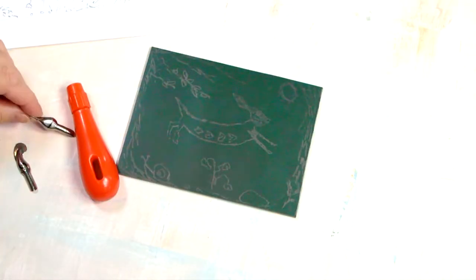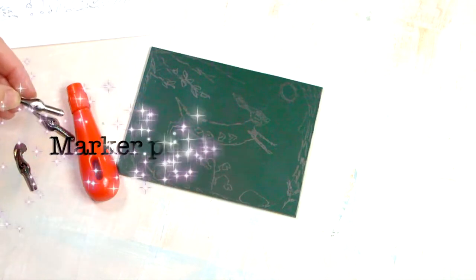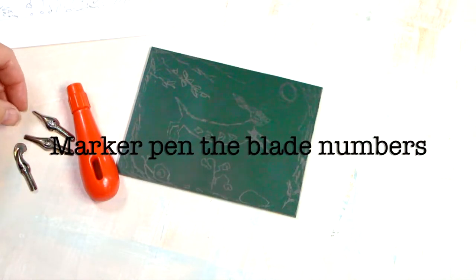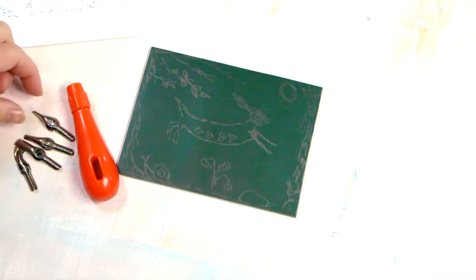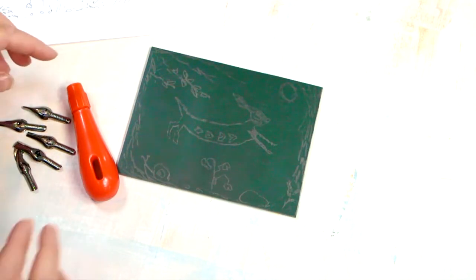This is my five cutting blades and the numbers on them on the reverse are so fiddly and I can't see them. So it's a good idea to get a marker pen and just number in permanent marker on the middle—that's number one, two, three, four, five—so you can easily find them without having to squint.